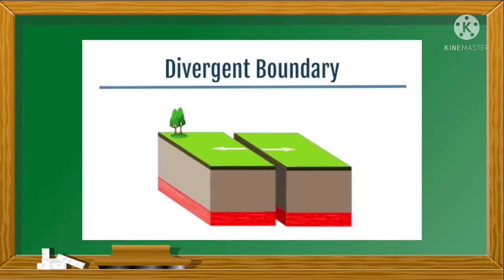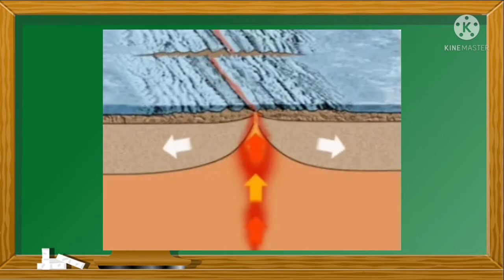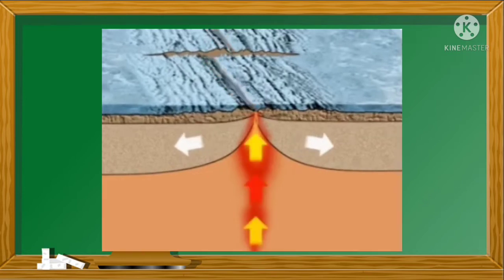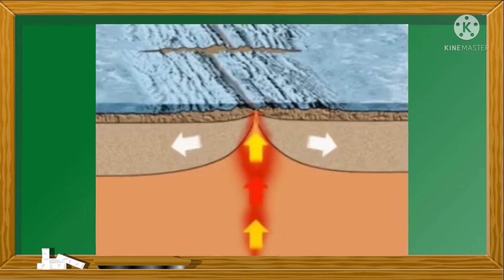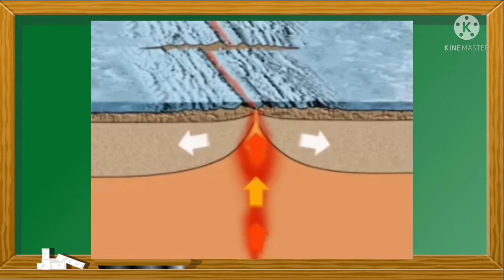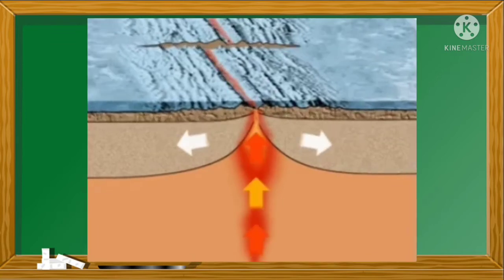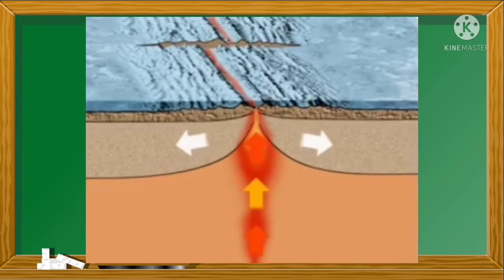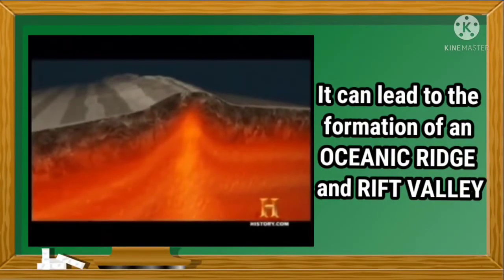Now let us continue our lesson on the processes that occur along a divergent plate boundary. When a divergent boundary occurs beneath oceanic lithosphere, the rising convection current below lifts the lithosphere, producing a mid-ocean ridge. Extensional forces stretch the lithosphere and produce a deep fissure. When the fissures open, pressure is reduced on the superheated mantle materials below. It responds by melting and the new magma flows into the fissure. The magma then solidifies and the process repeats itself. If the divergent movement is happening in the oceanic plates, it can lead to the formation of an Oceanic Ridge and Rift Valley.